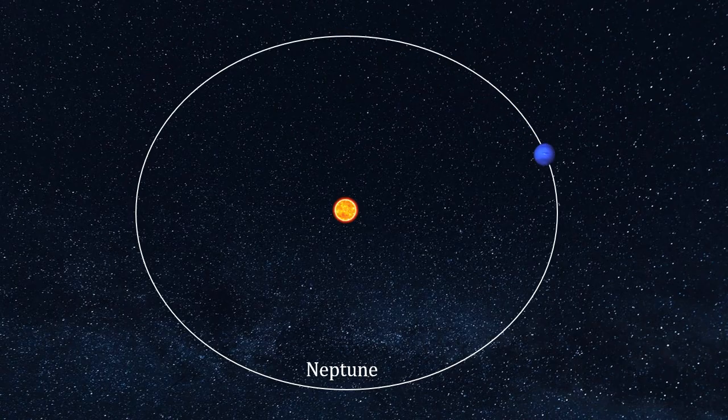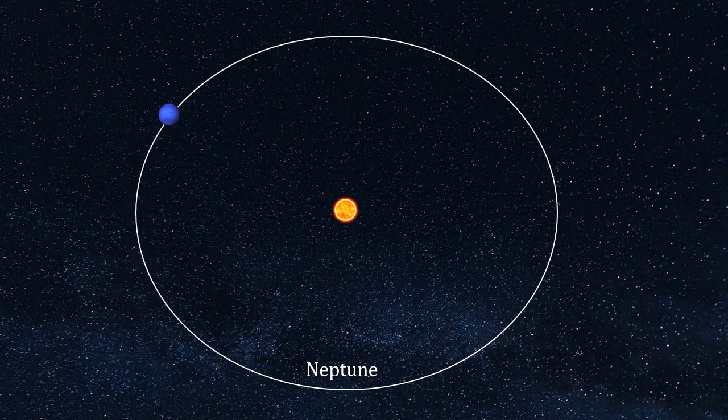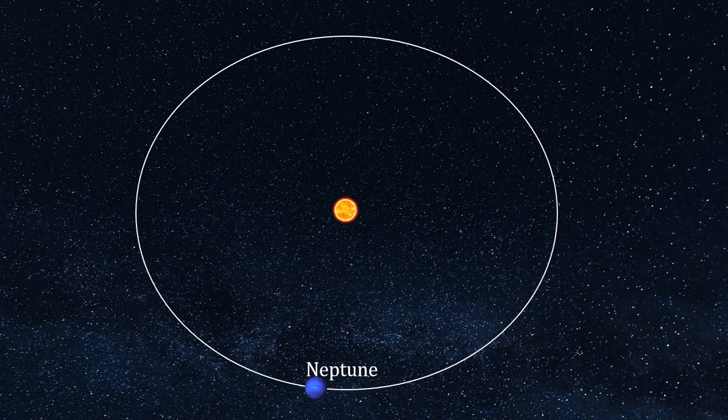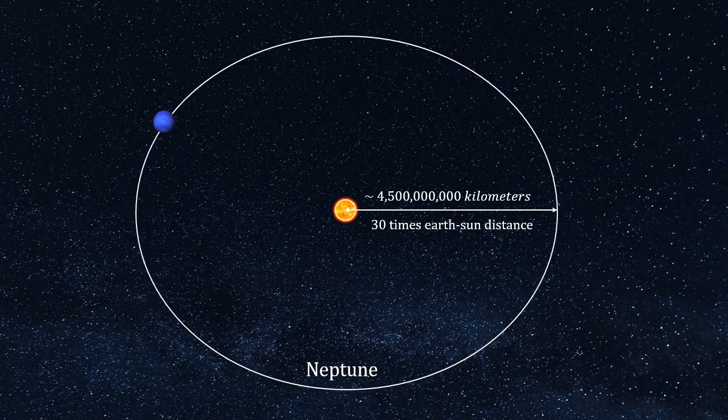Neptune, the planet named after the Roman god of the sea, is the farthest planet from the Sun, with a mean orbital radius of 4.5 billion kilometers, that is 30 times the Earth-Sun distance.